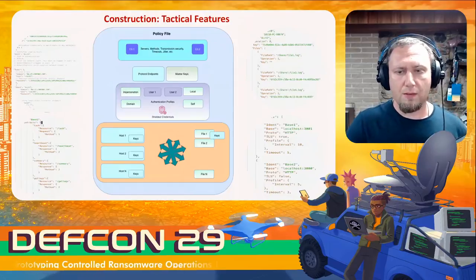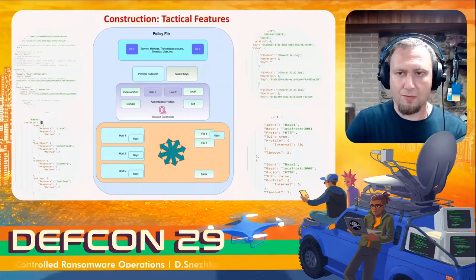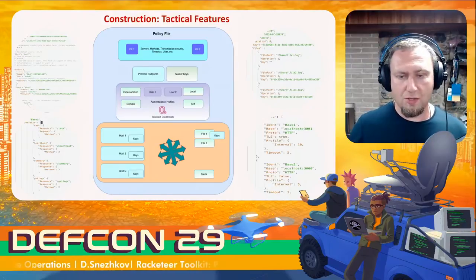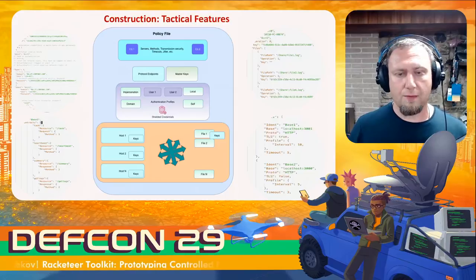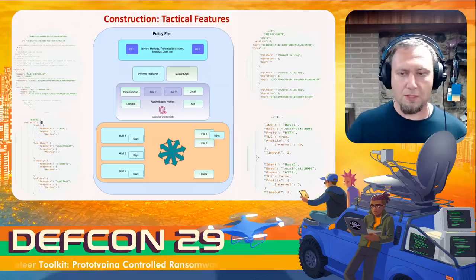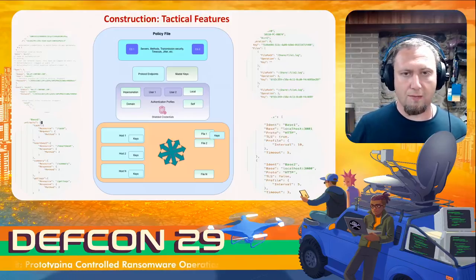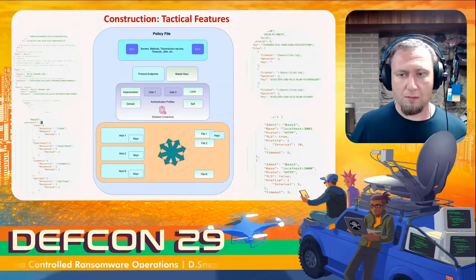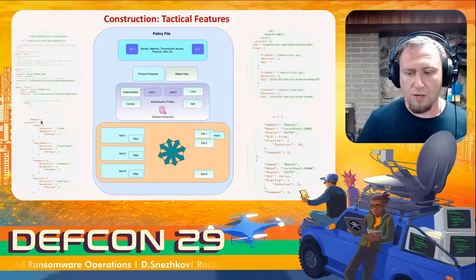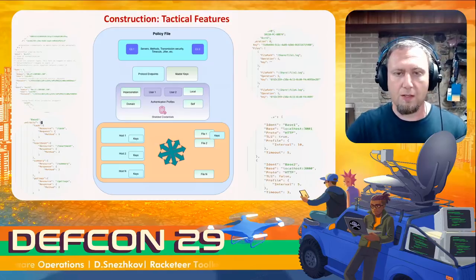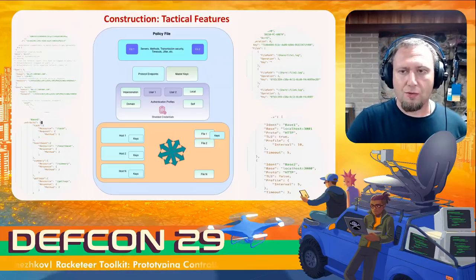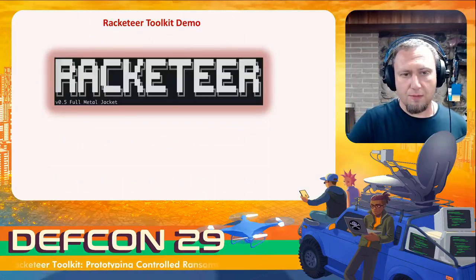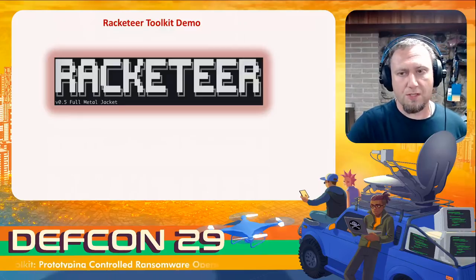The policy ties everything together: flexible connectivity to C2s, connectivity profiles, authentication maps matching credential triplets to hosts on a domain or not. You also have flexibility on key generation — encrypting assets with one key per host, or separate keys per file, or a mix. You can tier the priority on files so that if one key is recovered, others remain encrypted. This brings us to the demo where we talk about specifics of deployment and operations of the Racketeer Toolkit.